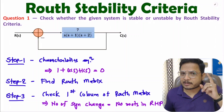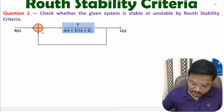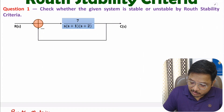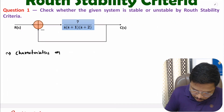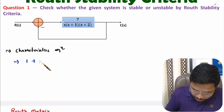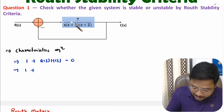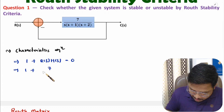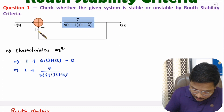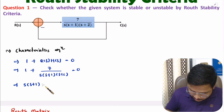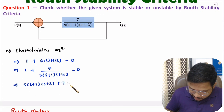Let us solve the first question. We need to identify the stability of this system using Routh stability criteria. In the first step, we identify the characteristic equation: 1 plus G(s)H(s) equals 0. Here G(s) is given as 7 divided by s(s+1)(s+2), and H(s) is unity feedback, so that is 1. Taking LCM, we get s(s+1)(s+2) plus 7 equals 0.